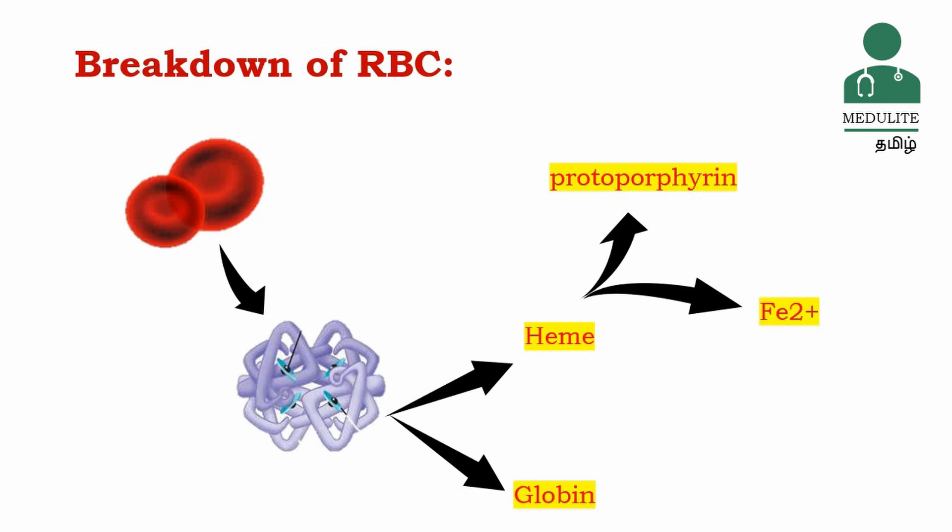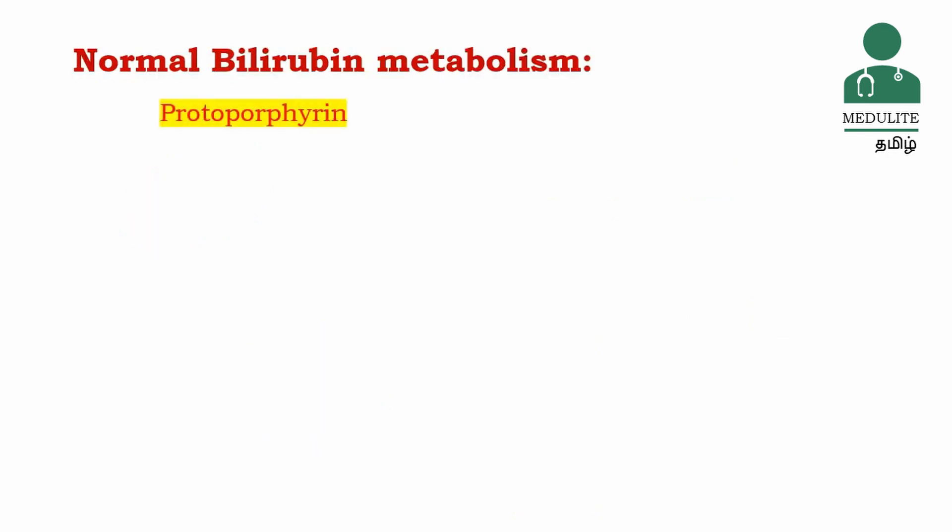There is a protein in our body. This protein will carry FEP plus ions in our bone marrow. The body will return it to our body, and we will convert the protoporphyrin step by step. In normal bilirubin metabolism, the first step is protoporphyrin.